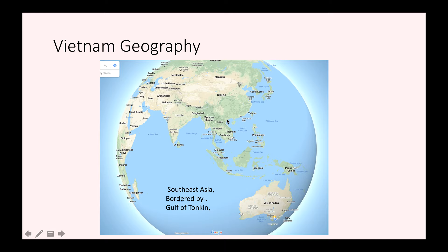The first thing to say about Vietnam is it's part of Southeast Asia. Southeast Asia is this area that I'm going to make a circle of with the mouse right now. Southeast Asia is between Australia to the south and East Asia to the north. East Asia includes China, Korea and Japan. This is Southeast Asia and part of Southeast Asia is Vietnam.